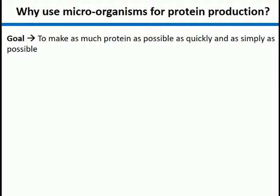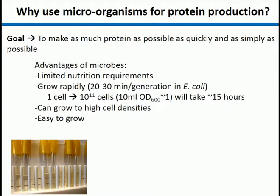It's worth starting off with your goal for protein production. If you start off at the beginning of the process, your goal is usually to make as much protein as possible, as quickly and as simply as possible. Microbes, and in particular bacteria, provide a huge advantage in this regard. Bacteria usually have relatively limited nutrient requirements. They grow rapidly, so you can produce lots of protein in a short amount of time. Part of the reason they grow rapidly is because the translation elongation rate is about double that of a eukaryotic ribosome.